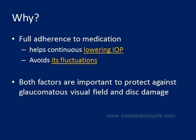We need the patient to be fully adherent to medication because adherence helps continuous lowering of the IOP and prevents fluctuation. Both factors are important — if the IOP is high, damage is likely to occur; if there is fluctuation, damage is likely to occur. So you want the patient to have a lower IOP all the time with no fluctuation. Both factors are important to protect against glaucoma visual damage and disc changes.